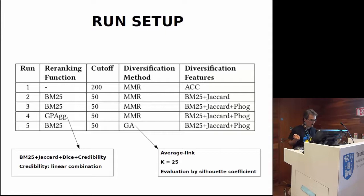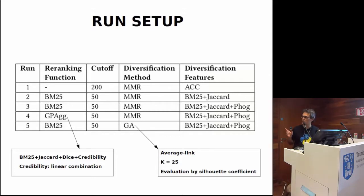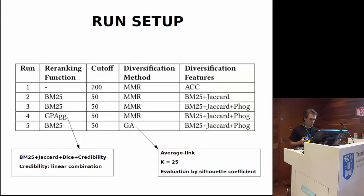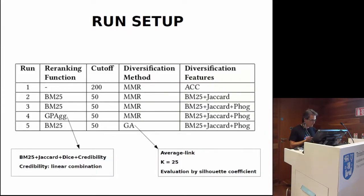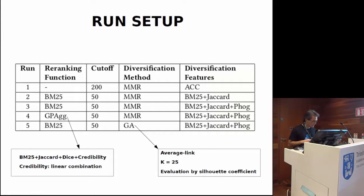Here is the run setup. For example, Run 4 uses a text-ranking function as the genetic programming approach — GPAG — and the diversification as the maximal marginal relevance. Run 5, for diversification, uses the alternative technique: the genetic approach with clustering as average link on 25 clusters.